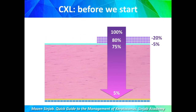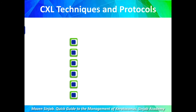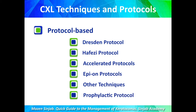Additionally, if we remove the epithelium and apply riboflavin for only three minutes, it will reach only the anterior third of the stroma. To allow riboflavin to reach the deep stroma, we must apply it for at least 30 minutes. Now let us start with the protocols.